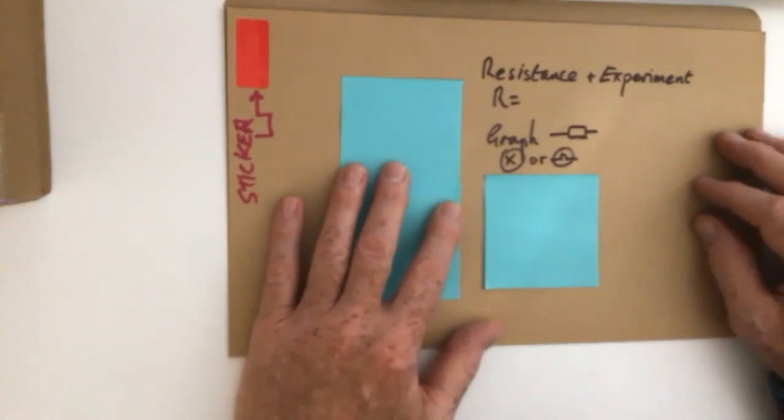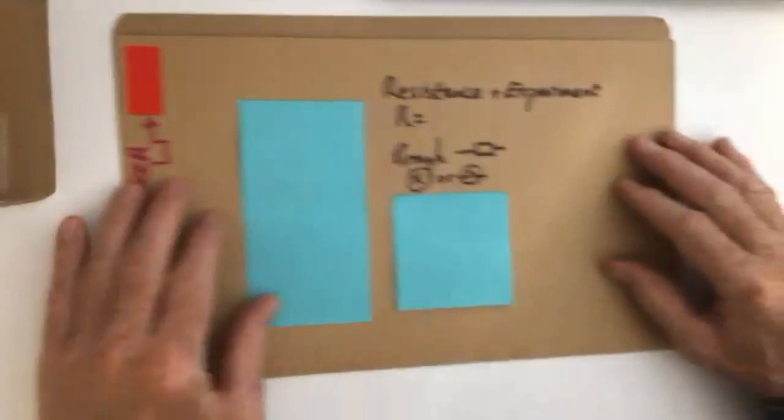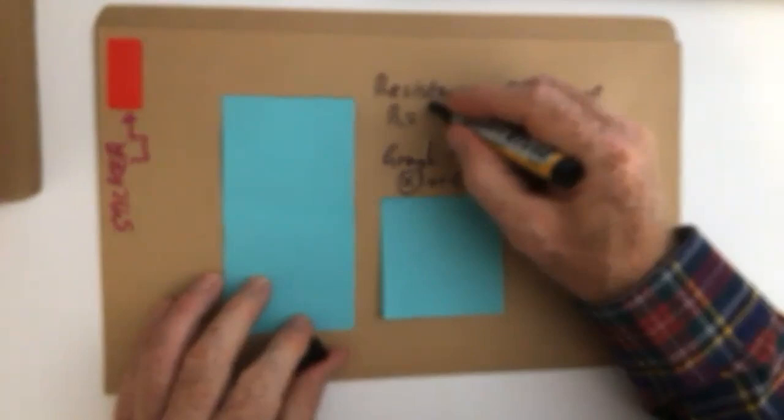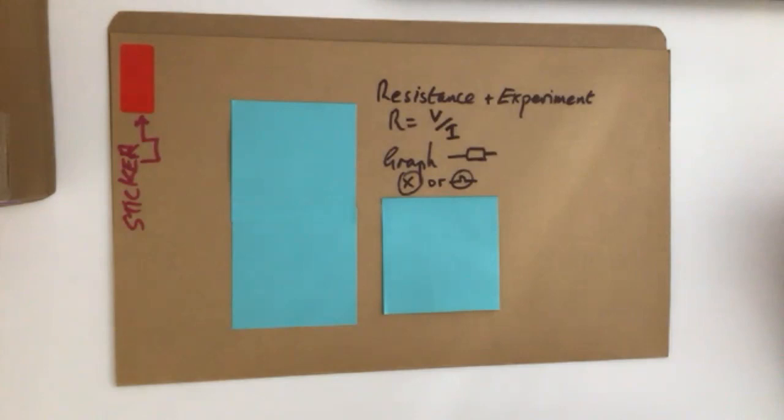Right, resistance experiment. This is a classic one to do at school or college, a good old favorite one to do. And in order to measure resistance, you've just seen, we need to measure voltage and current. Nice little experiment. We need a voltmeter and an ammeter. And the easiest way to set this up, there's lots of different ways of doing it.